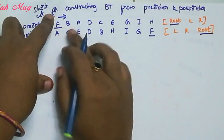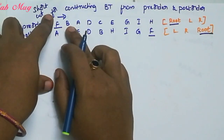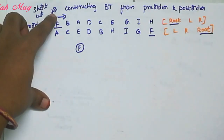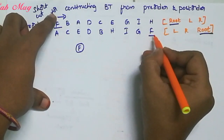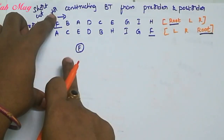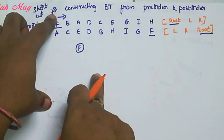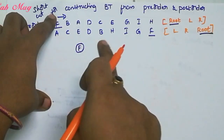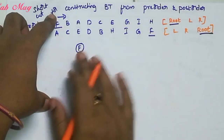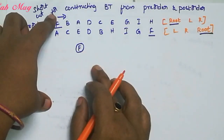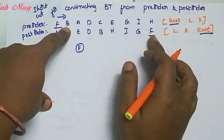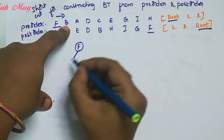Root element F already complete chesham. The next element in pre-order is B. So B ane adhi post-order lo ekkad undho chustham. B ane adhi F root element ke inside, left side undhi. Post-order lo left complete chestha, tarvata right complete chestham. So B ane adhi left side allotment chestham.